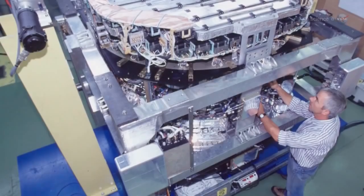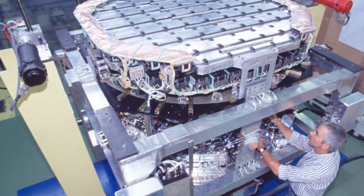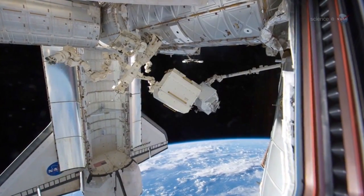The Alpha Magnetic Spectrometer, AMS for short, was delivered to the ISS by the Space Shuttle Endeavour on its final flight in May 2011.